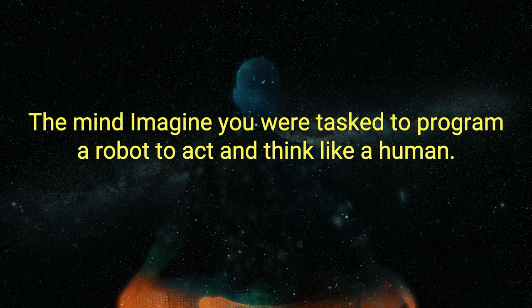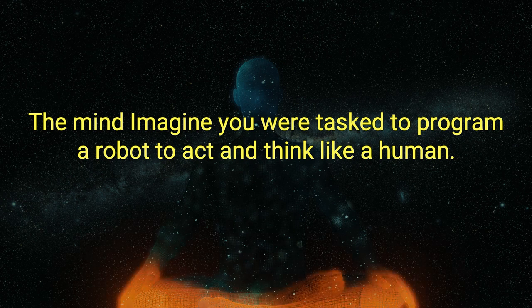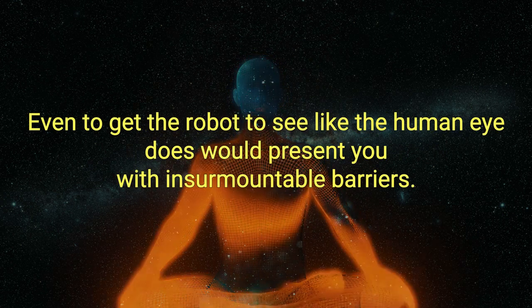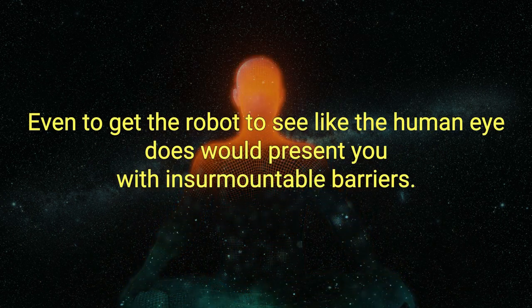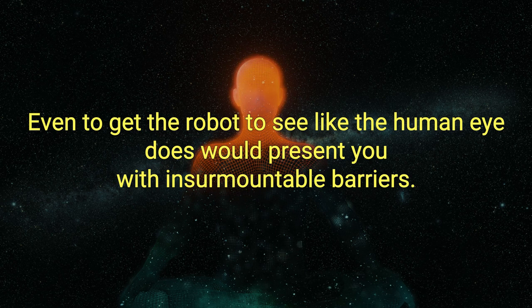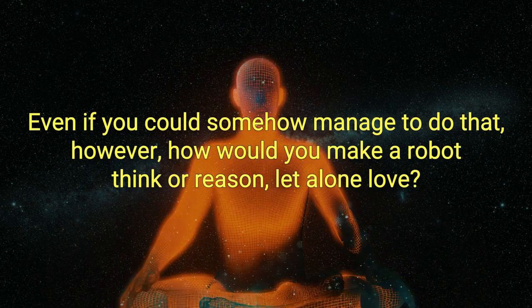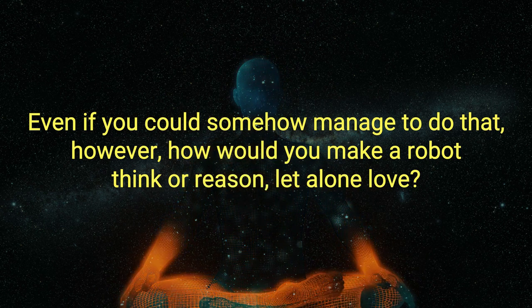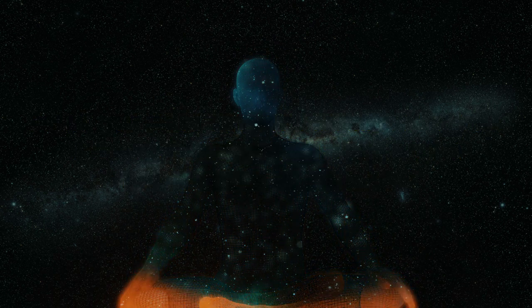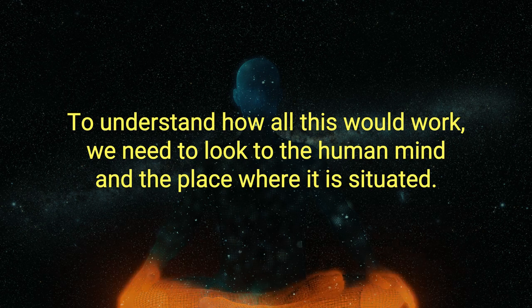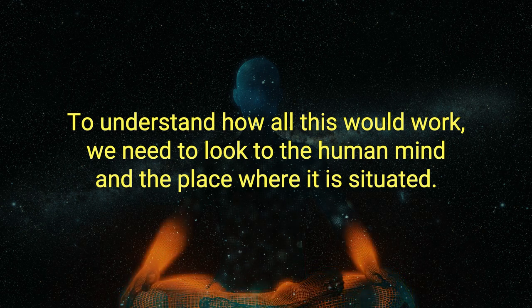Imagine you were tasked to program a robot to act and think like a human. How would you go about it? Even to get the robot to see like the human eye does would present you with insurmountable barriers. Even if you could somehow manage to do that, how would you make a robot think, or reason, let alone love? To understand how all this would work, we need to look to the human mind, and the place where it is situated, the brain.